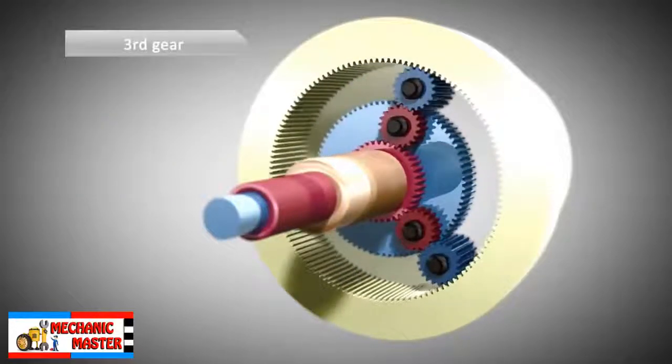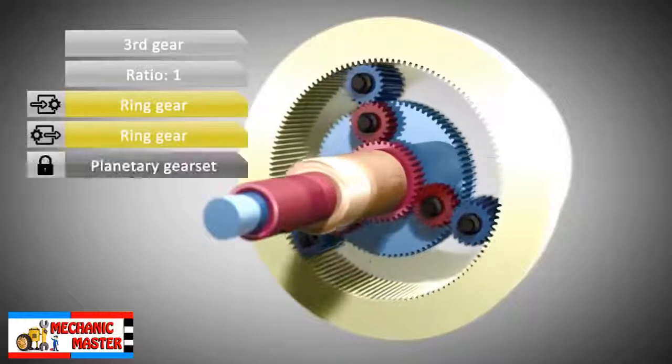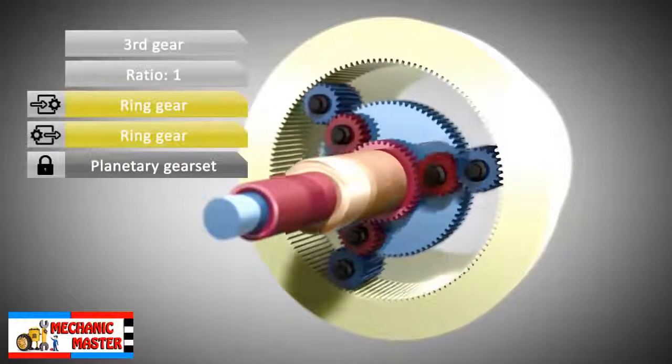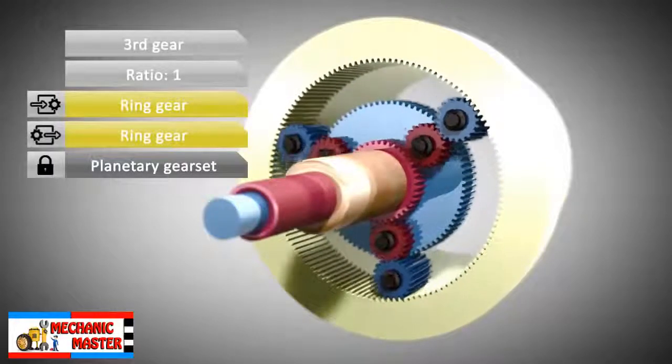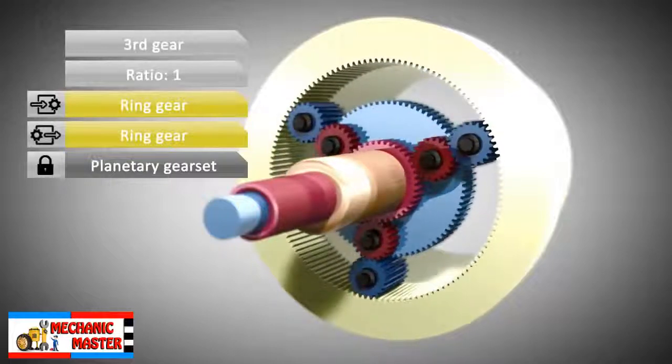In third gear, a gear ratio of one is accomplished by locking all relevant parts of the planetary gear set. Now, the whole planetary gear set is rotating.